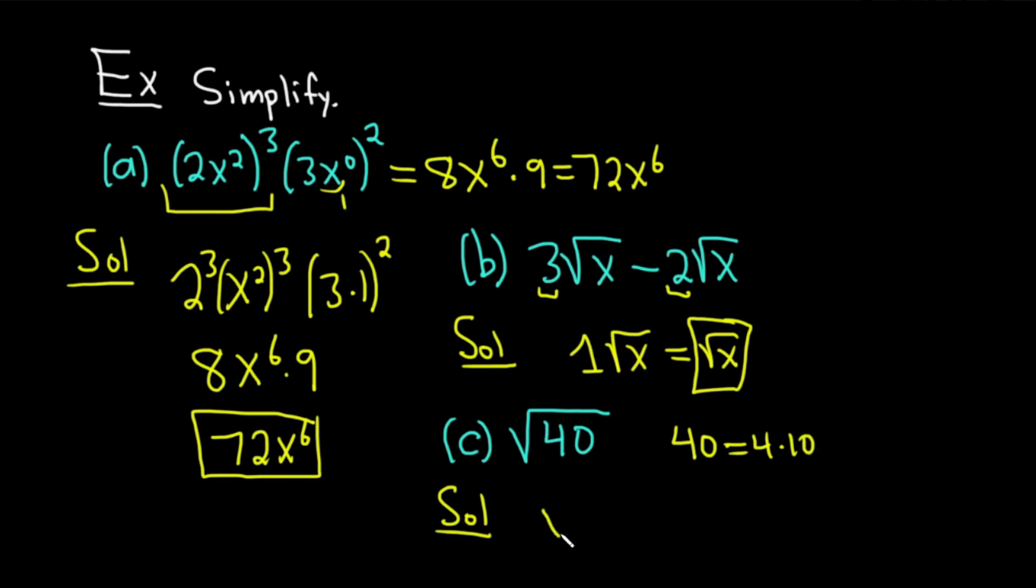Because you can write 40 as 4 times 10. So we can write this as the square root of 4 times 10. And then we can break this up into two square roots. This is the square root of 4 times the square root of 10. And the square root of 4 is 2. So this is equal to 2 square root of 10. It takes a little bit of practice, and the more you do, the better. But that's the idea. You want to basically think about what's the largest factor of that number that you can take the square root of and get a whole number. Let's do some more examples.